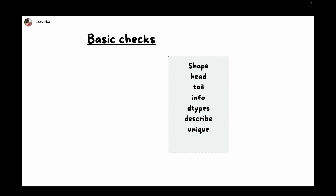Describe helps in doing statistical analysis. Unique helps in finding unique values, and value_counts helps in finding the count of unique values. For example, if you have a gender column and want to know the unique categories, it's male and female — that's where you use unique. If you want to know how many males and how many females, you use value_counts.